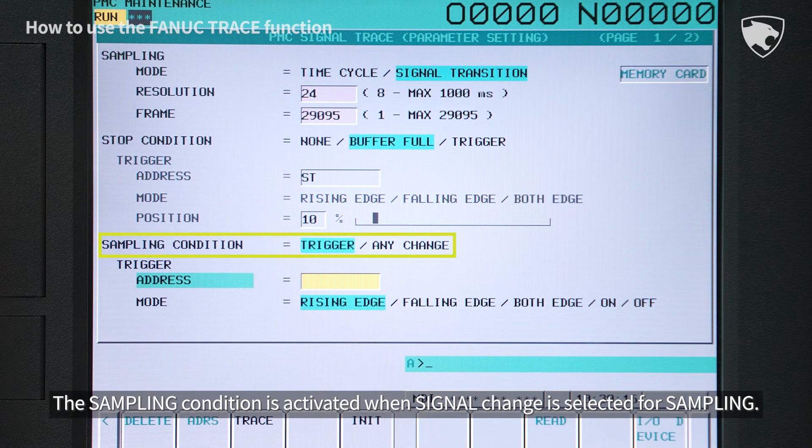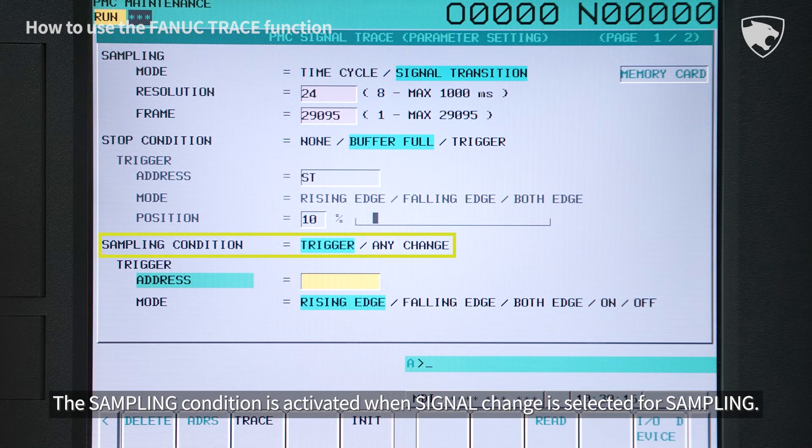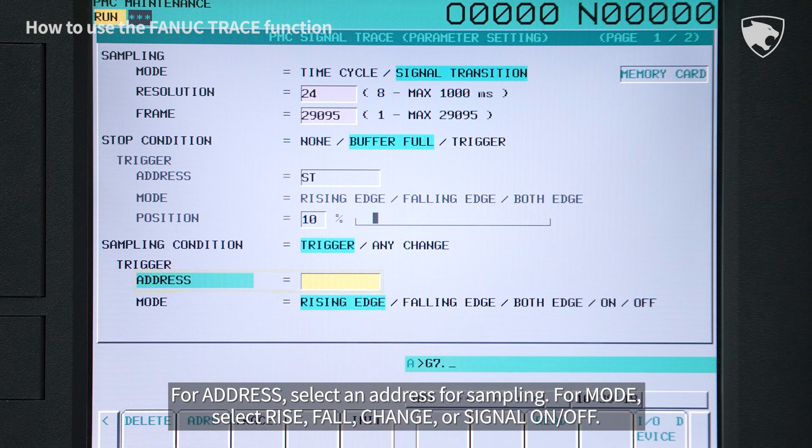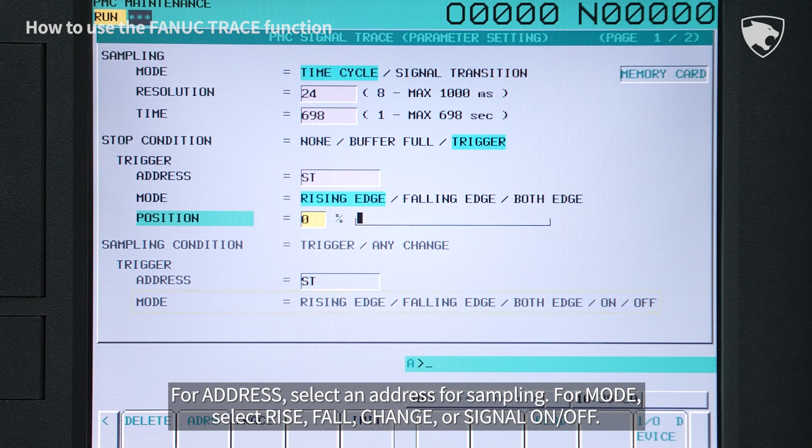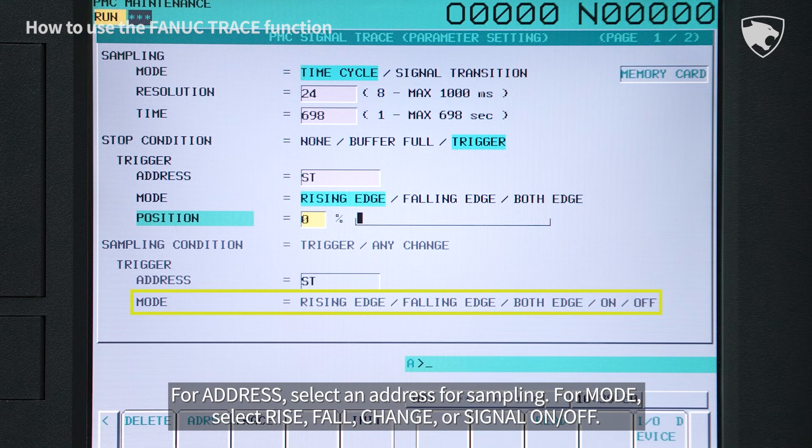The sampling condition is activated when signal change is selected for sampling. For address, select an address for sampling. For mode, select rise, fall, change, or signal on-off.